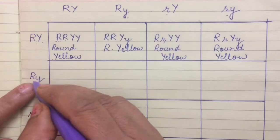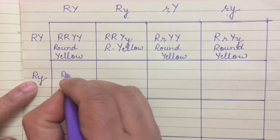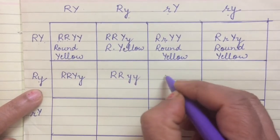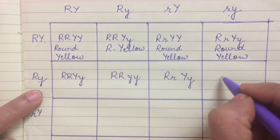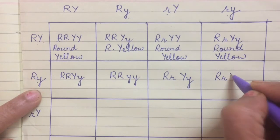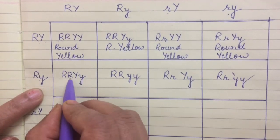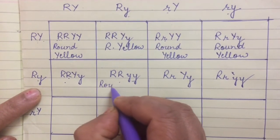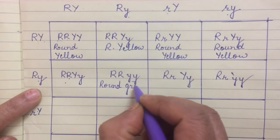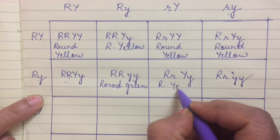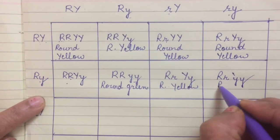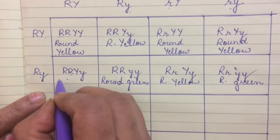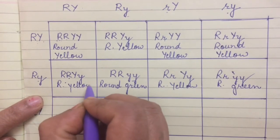Ab isi tarah se capital R small y gamete sab ke saath combine karega. Combinations: capital R capital R capital Y small y, capital R capital R small y small y, capital R small r capital Y small y, and capital R small r small y small y. The phenotypes: round yellow, round green (dono small y hain), round yellow, and round green (small y small y). Yeh round yellow ho gaya. Clear hua? Yeh ho gaya round yellow — aap is tarah se sab bana loge.